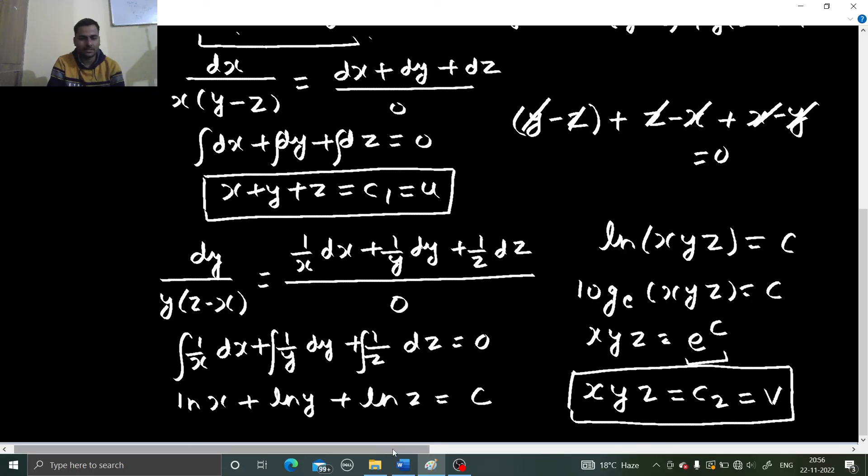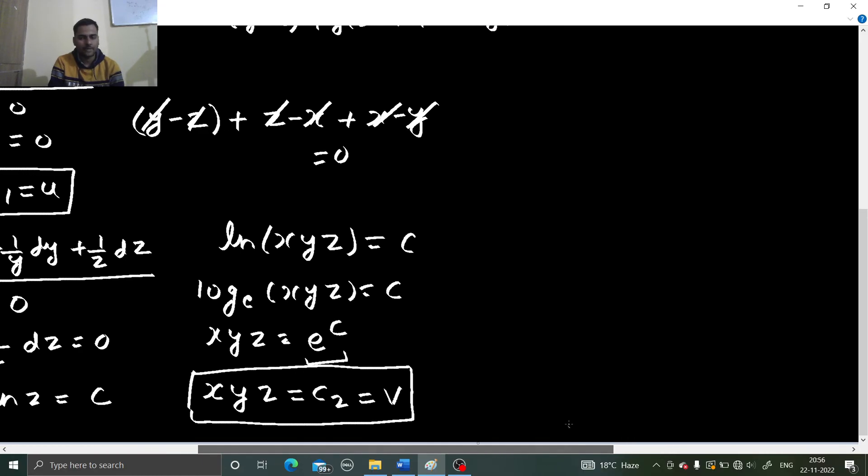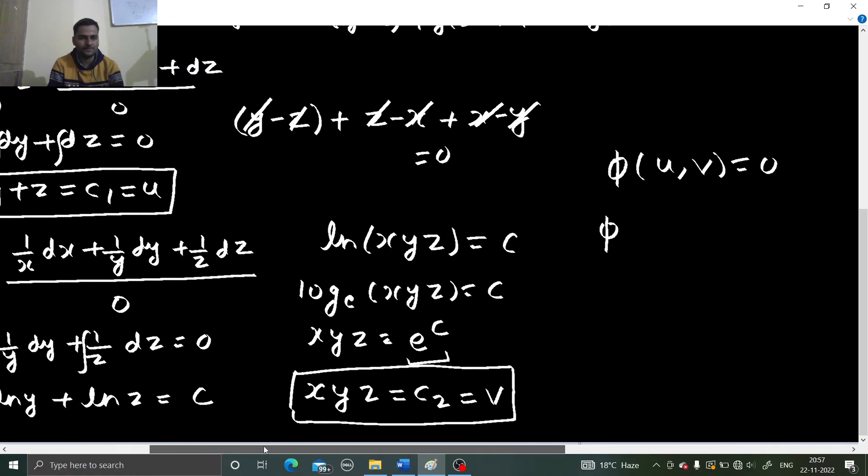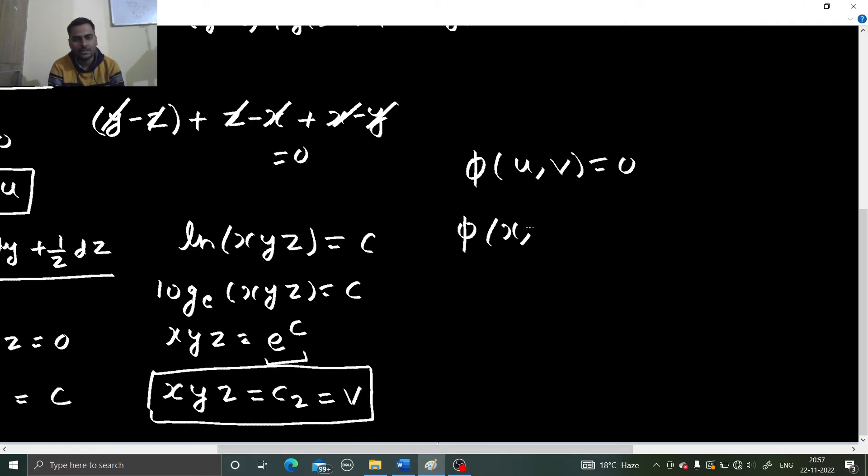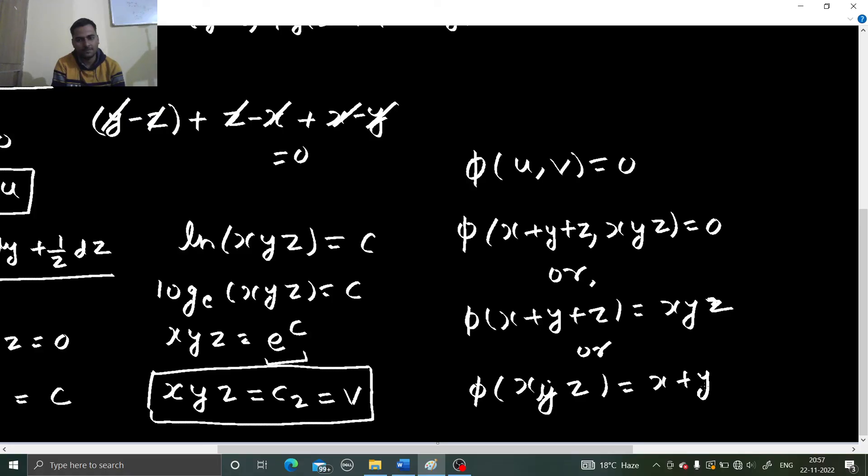So final nail in the coffin is that we have to write the solution, which is phi of u, v equals to 0. Phi of c1, c2 equals to 0, whatever you want to say. So x plus y plus z was the first one, and their product was the second one. So x plus y plus z, xyz equals to 0. Someone will write like this: phi of x plus y plus z equals to xyz. Or your neighbor will write something like this: xyz equals to phi of x plus y plus z.